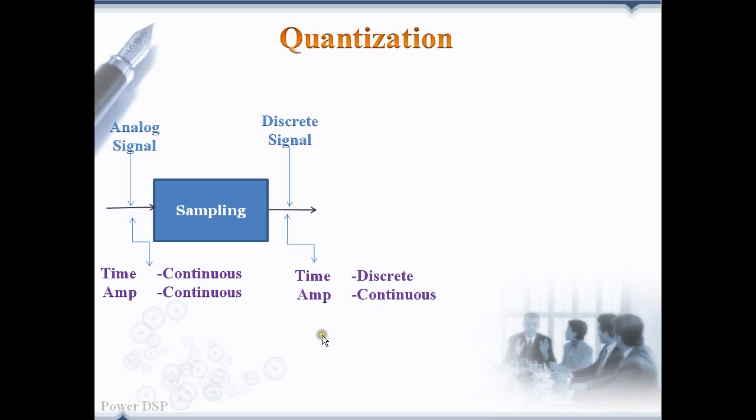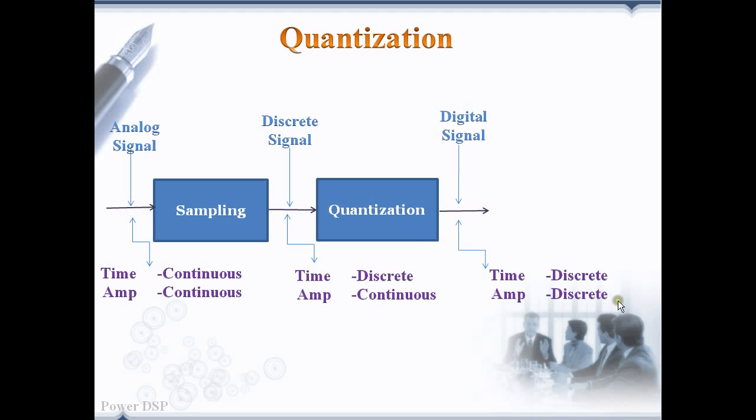For this, we have to bring down the continuous range of amplitude values into a limited set of values. This is what we are doing in quantization—we are mapping the continuous range of values into a limited set of values. So amplitudes are also discretized here. Time is discrete, amplitude is also discrete—discrete in time and discrete in amplitude, which is called digital signals.